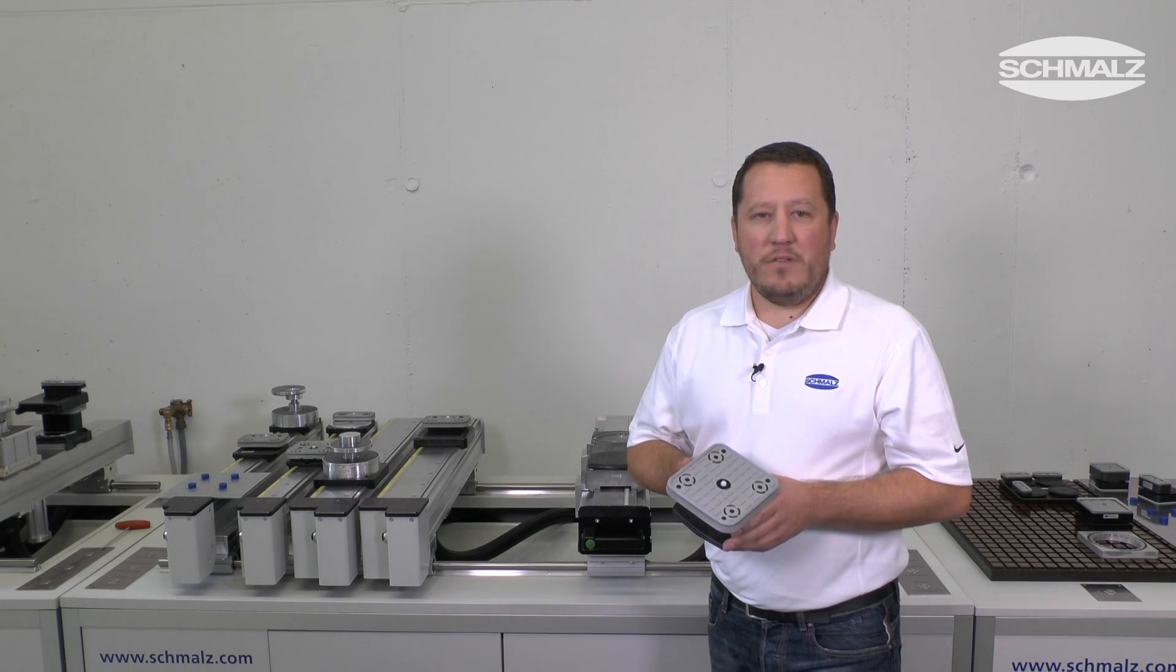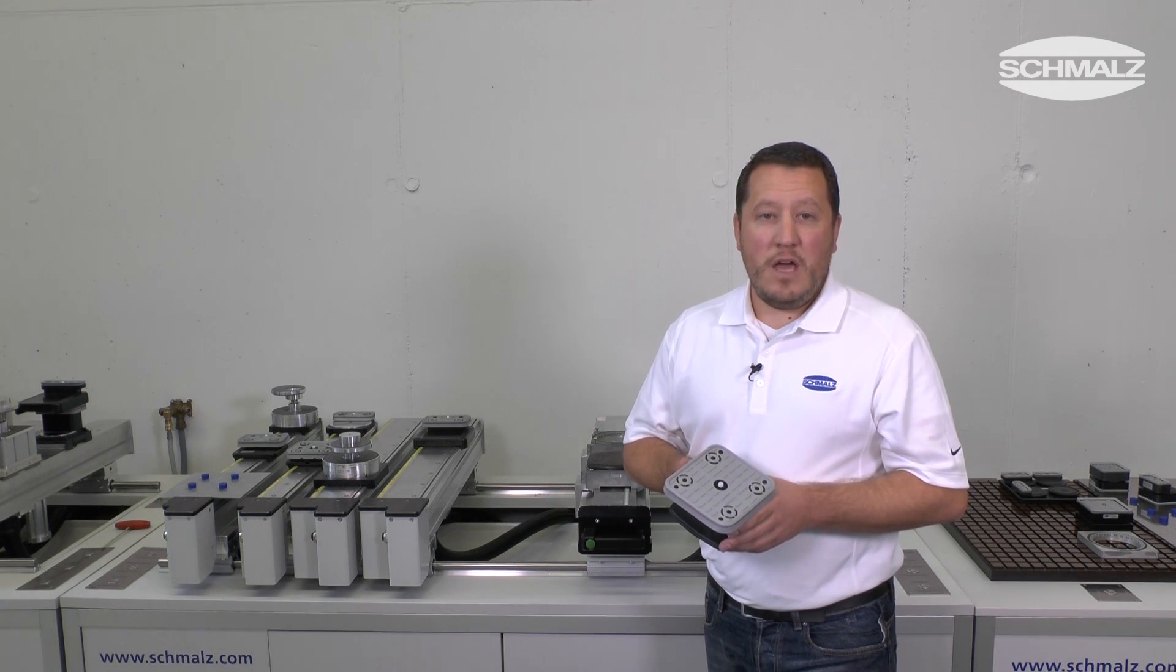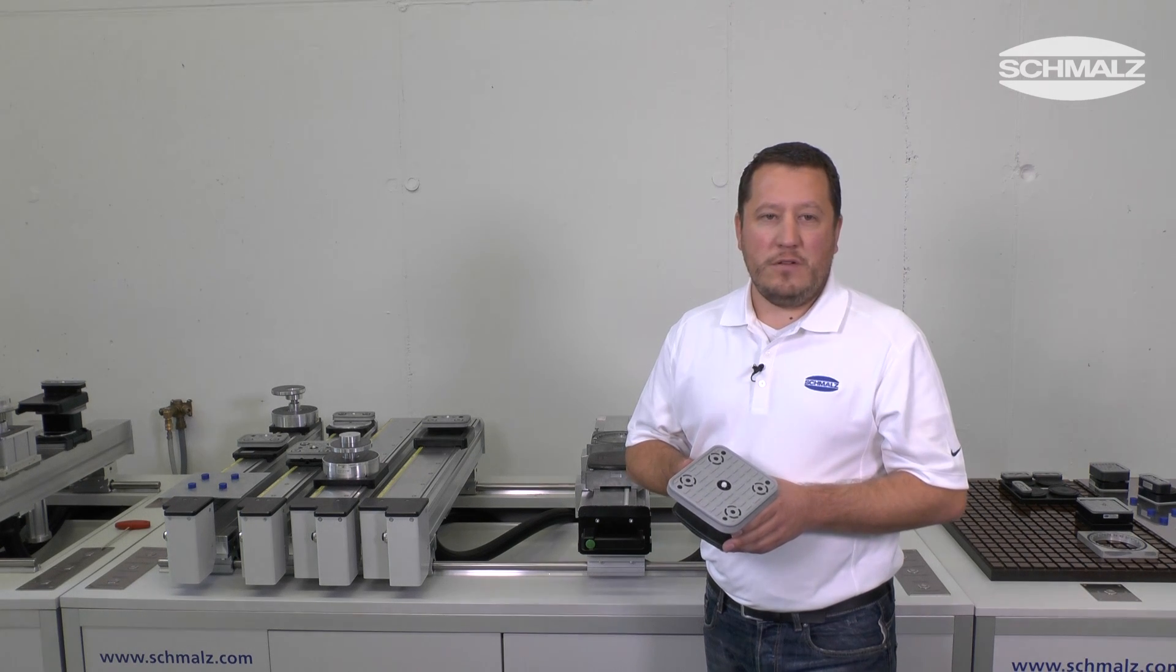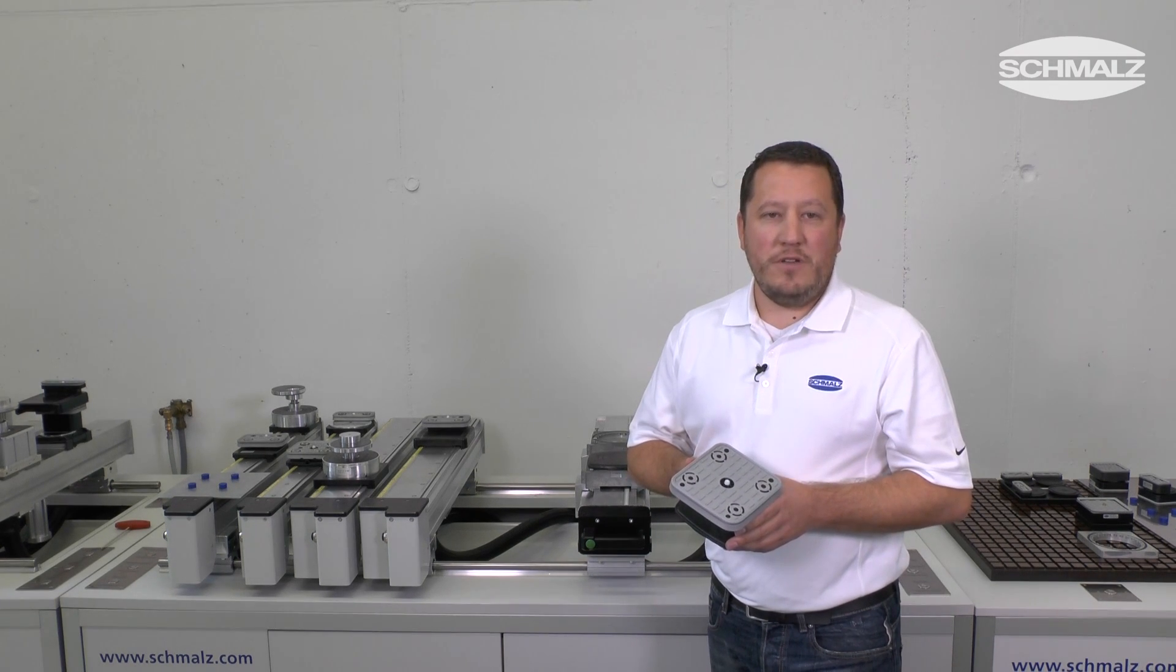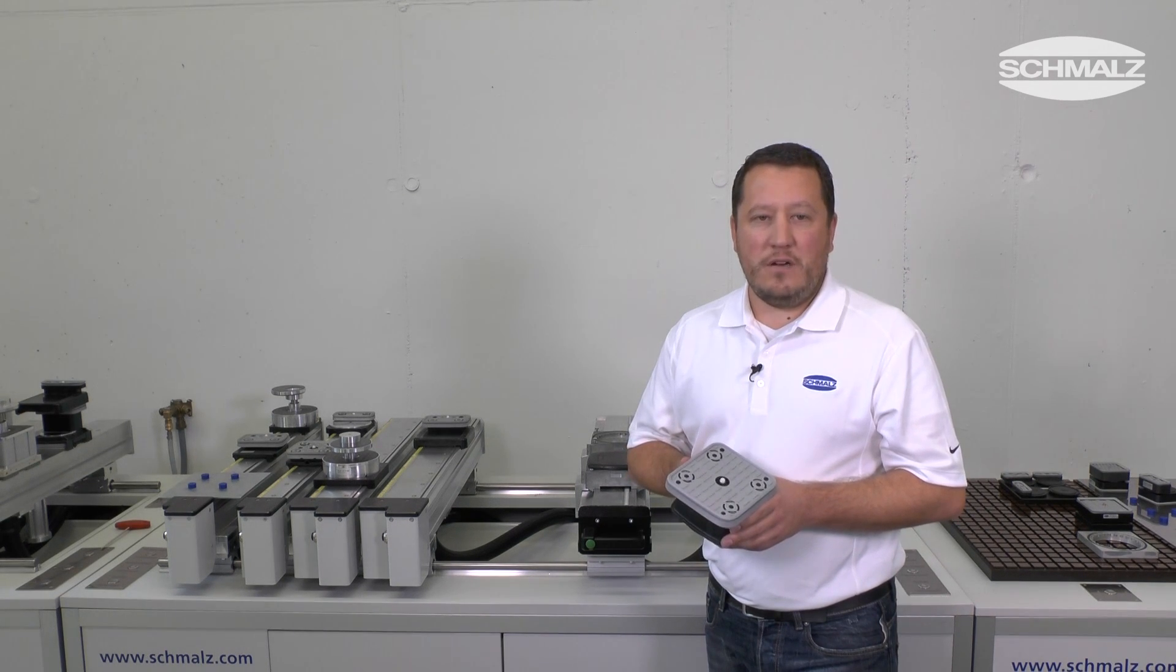Schmalz vacuum clamping solutions are the perfect substitution for your BSA blocks. They are very robust, have the highest holding forces and are very attractively priced. Various geometries and the flexible setup help to produce any workpiece in the highest quality standards.